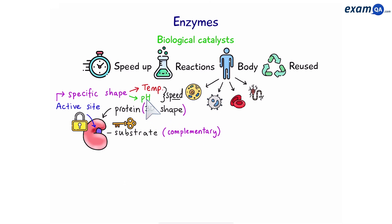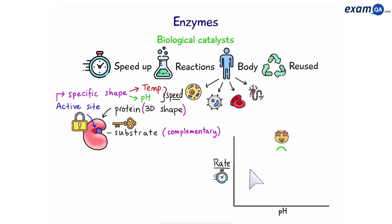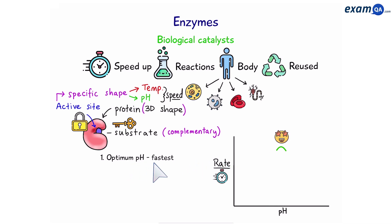Now let's look at pH. Every enzyme has an optimum pH — the pH where it works best. At the optimum pH the enzyme can react with the most number of substrates per second.